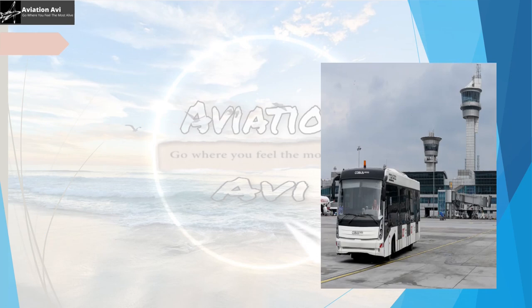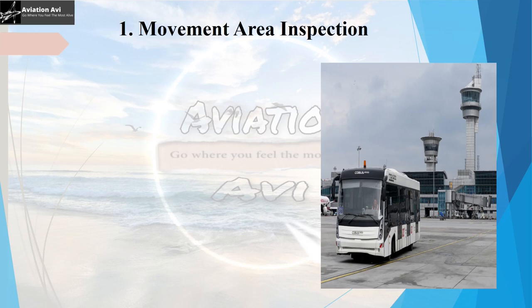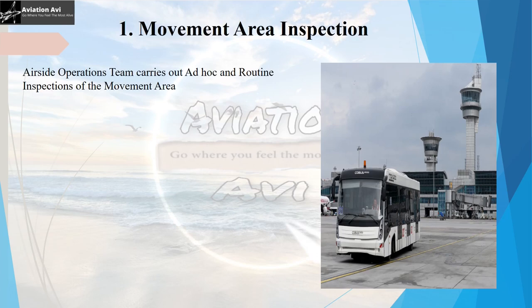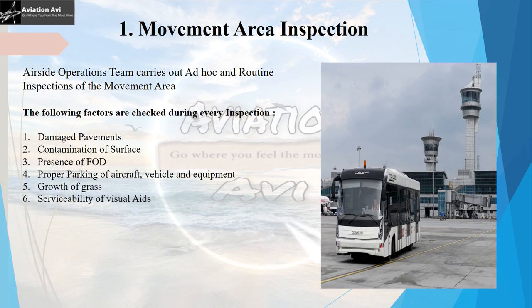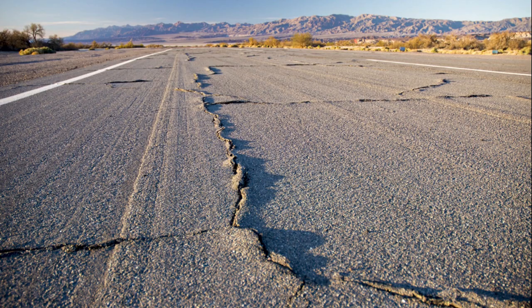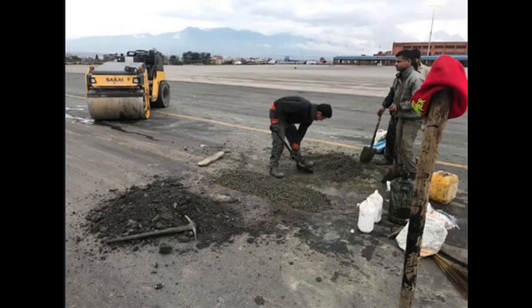The first function is inspection. The air side operations team carries out routine and ad hoc inspections of the movement area. Routine inspections are mandatory inspections carried out at regular intervals during a shift or day, while ad hoc inspections are carried out based on requirement. The factors checked during every inspection include damages in the pavement, which may be notified for repair during airfield maintenance works.